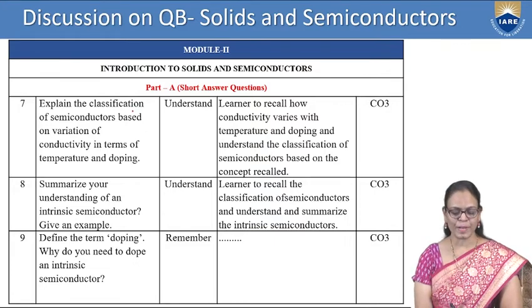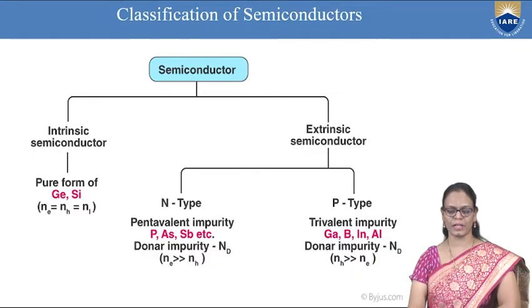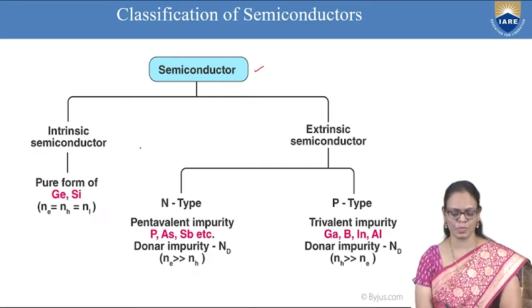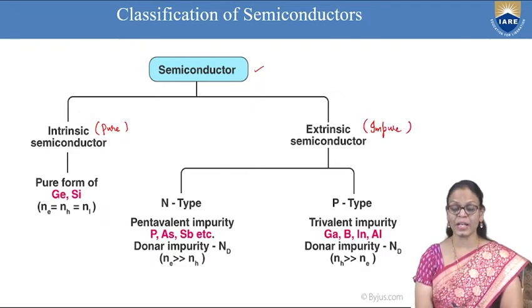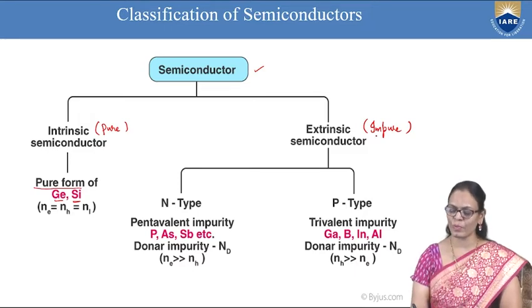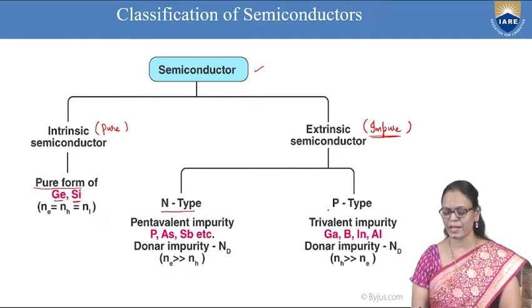Explain the classification of semiconductors based on variation of conductivity in terms of temperature and doping. Semiconductors are broadly classified into two types: intrinsic semiconductors, which are pure semiconductors, and extrinsic semiconductors, which are impure. Examples of intrinsic semiconductors are germanium and silicon. When an impurity is added to a pure semiconductor, it becomes extrinsic, and based on the type of impurity, it is classified into N-type and P-type.